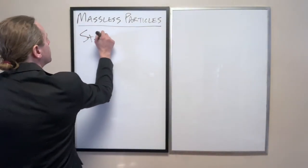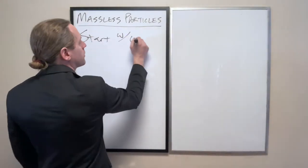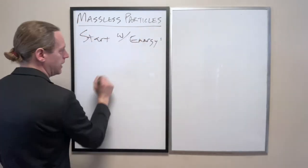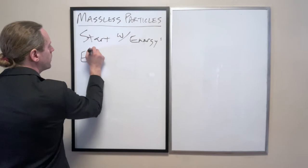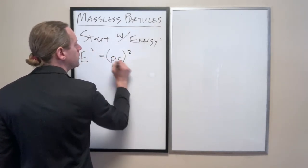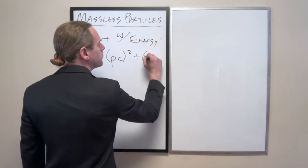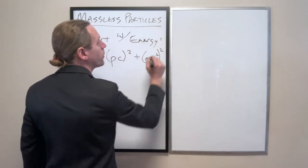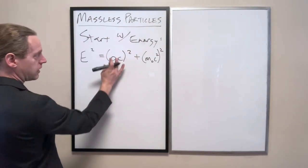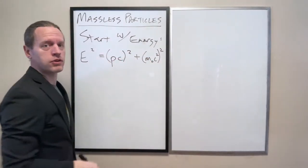So, start with the energy, the relativistic energy, and recall, E squared equals PC squared plus MC squared squared. And again, this is the kinetic term, essentially, and this is the rest energy term.